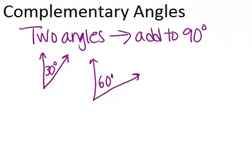Notice that the two angles do not have to be next to each other, as in they don't need to be adjacent and sharing a common ray to be complementary. When two angles are complementary, they are considered to be complements of each other. So these two angles are complements, just a variation of the word complementary.